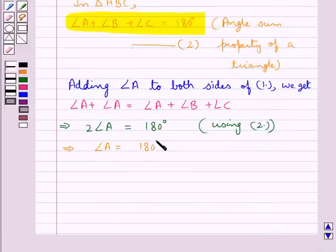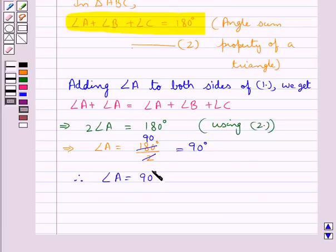From here we get angle A is equal to 180 degrees by 2. Now, 2 times 90 is 180, so this is equal to 90 degrees. That is, we have angle A is equal to 90 degrees.